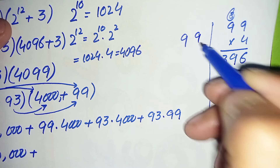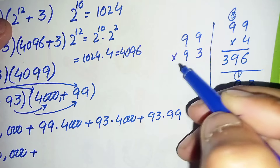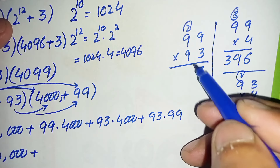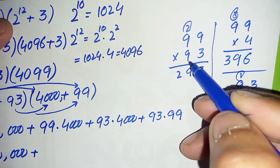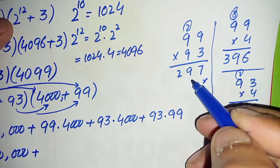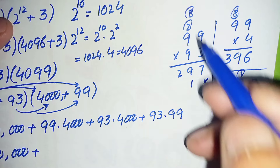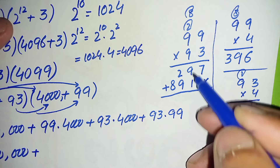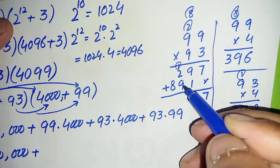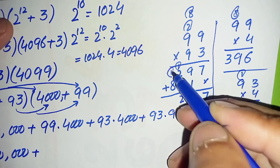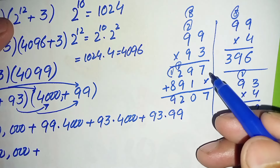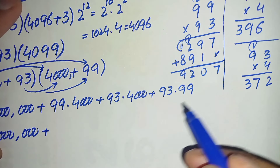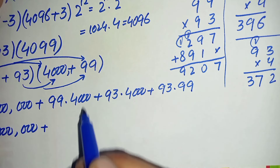Now we will multiply 99 times 93. 9 times 3 is 27, carry 2; 9 times 3 is 27, plus 2 is 29. Then 9 times 99: 9 times 9 is 81, carry 8; 9 times 9 is 81, plus 8 is 89. Adding these two rows: 7, 9 plus 1 is 10 carry 1, 9 plus 1 plus 2 is 12 carry 1, 8 plus 1 is 9. So 99 times 93 gives 9207.